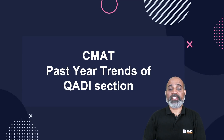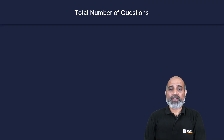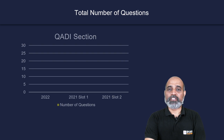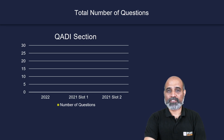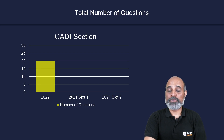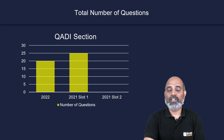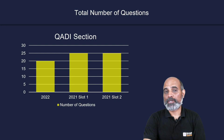Let's look at CMAT past year trends of the QADI section. Looking at the total number of questions in the past two years across three slots overall: in CMAT 2022, there were 20 questions overall in the QADI section. In 2021 slot one, there were 25 questions overall, and in slot two of 2021, we had 25 questions overall.